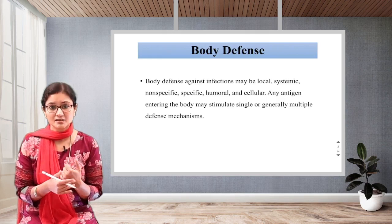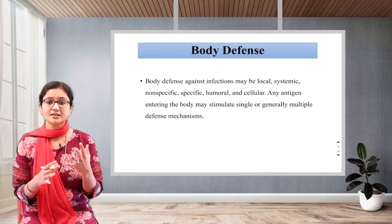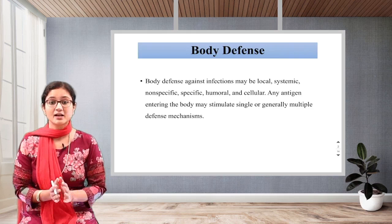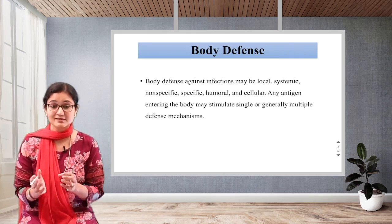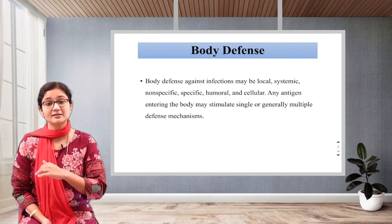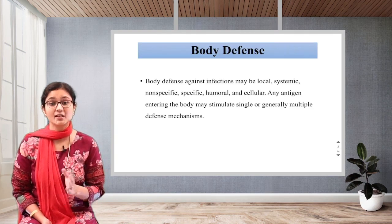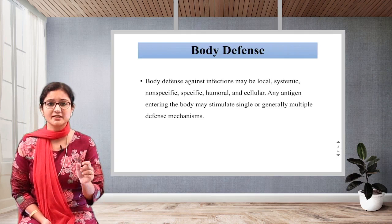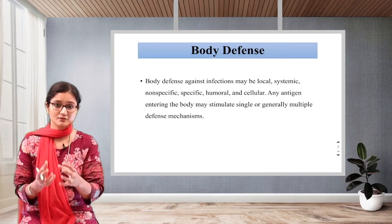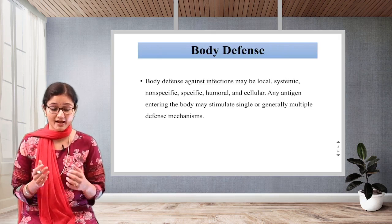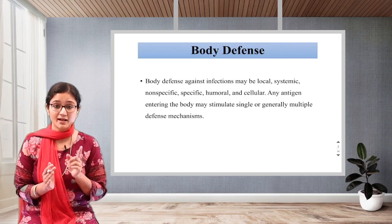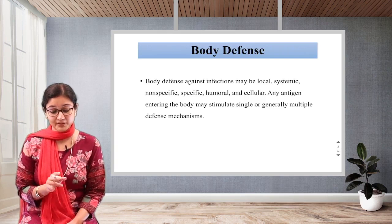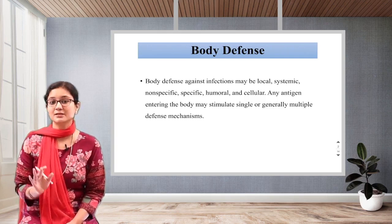It can be either local or systemic — meaning the whole body — or either specific, nonspecific, humoral, or cellular at the cell level. At different levels, our body works for defense against various infections. Any antigen — a foreign body that enters and causes damage — is remembered by our body, which then produces antibodies against it. Any antigen entering the body may stimulate single or generally multiple defense mechanisms.